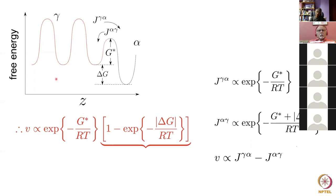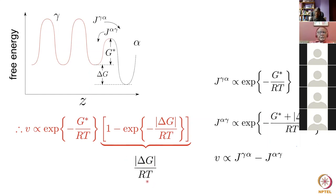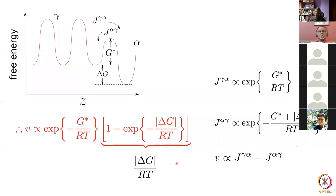Substituting those terms, the velocity is proportional to exp(−G*/RT) times [1 − exp(−|ΔG|/RT)], so the velocity is not directly proportional to the driving force. This looks like it violates T·Ṡ = J·x implying J ∝ x. However, this physically derived equation ought to work for any magnitude. When ΔG is small, the whole expression reduces to |ΔG|/RT, and we recover a direct proportionality between velocity and driving force.